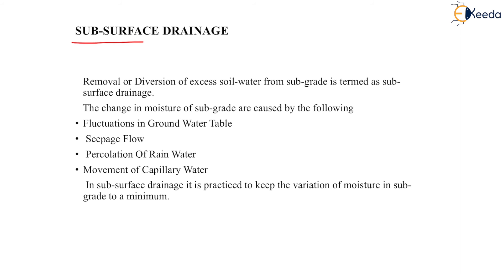Next is subsurface drainage. Removal or diversion of excess soil water from the subgrade is termed as subsurface drainage. The changes in moisture of the subgrade are caused by the following: fluctuation in the groundwater table, seepage flow, percolation of rainwater from the top to the bottom layer of the pavement, and movement of capillary water. In subsurface drainage, it is practiced to keep the variation of moisture in the subgrade to a minimum.